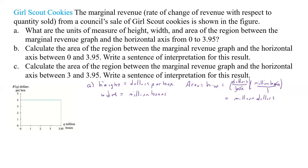Now we're supposed to calculate the area of the region between the marginal revenue graph and the horizontal axis and write a sentence of interpretation. For part B, we find area equals height times width. Our height is 4 and our width is 0 to 3.95, so that's 3.95. Plugging that into the calculator, we get 15.8 million dollars.